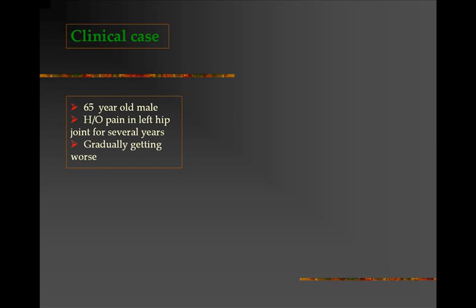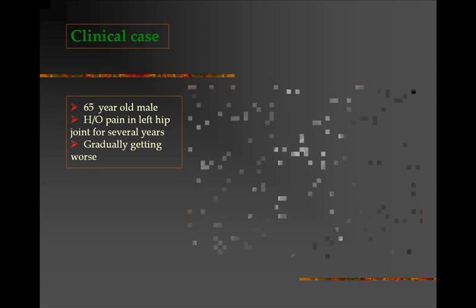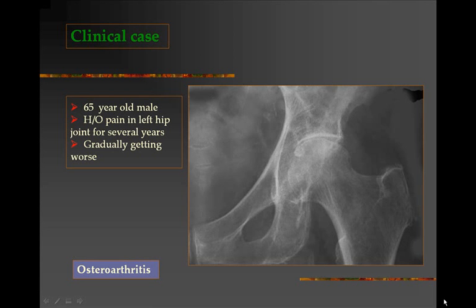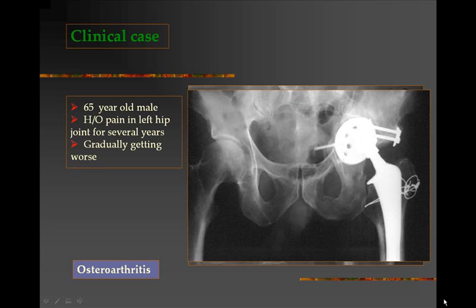This clinical case is of a 65-year-old male patient who complains of pain in the left hip joint for several years, which has gradually been getting worse. The x-ray of this patient shows reduced joint space between the acetabulum and the femoral head. This is osteoarthritis of the hip joint, which in advanced stages requires total hip joint replacement surgery, where the acetabulum and the femoral head and neck region are replaced with a prosthesis.